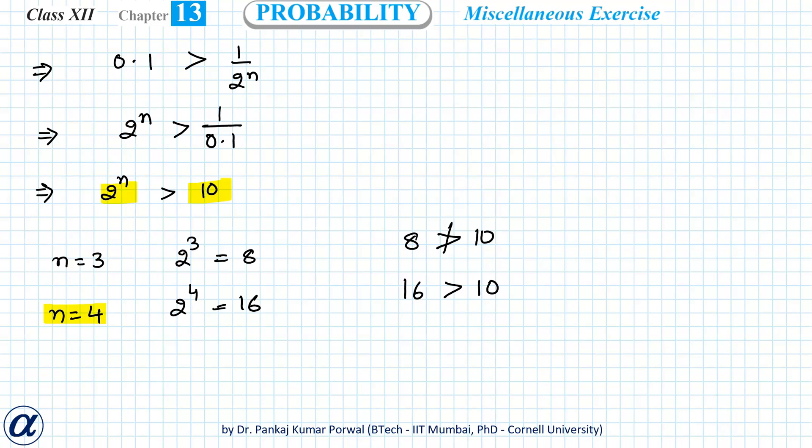I will have to toss the coin at least 4 times. Then the probability of getting at least one head will be greater than 90 percent.